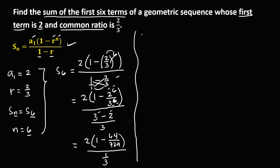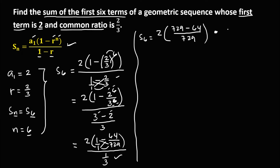Then we have s sub 6 equals 2 times, so for this, we can apply the butterfly method, over 1. So we have 1 times 729, that's 729, then minus 1 times 64, that's 64, over 1 times 729, that's 729. Then times the reciprocal of 1 over 3, that's 3 over 1.